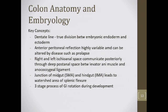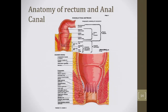The dentate line is probably the most important landmark in daily colorectal practice — it's the true division between the embryonic endoderm and ectoderm. The anterior peritoneal reflection is another key concept, variable and important in rectal cancer discussions. The right and left ischiorectal anal spaces communicate posteriorly through the deep post-anal space — this is why horseshoe abscesses occur. The junction of the midgut and hindgut creates a watershed area at the splenic flexure. Don't forget the three-stage process of GI rotation during development.